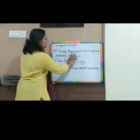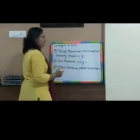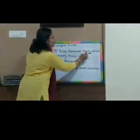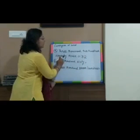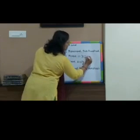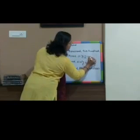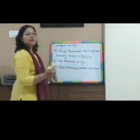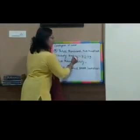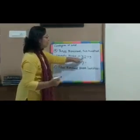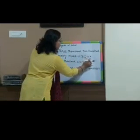Now, at the 1000s place, we are having 3. So, we will write 3 first at the 1000s place. Then, 200 — so write 2 at the 100s place. Then, 73 — so 7 at the 10s place and 3 at the 1s place. So, this is how we will write the number from word form. The numeral form will be 3,273.